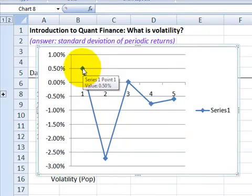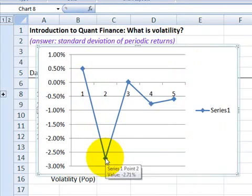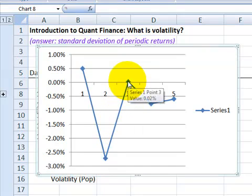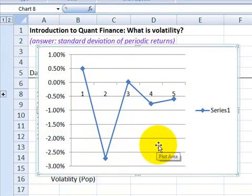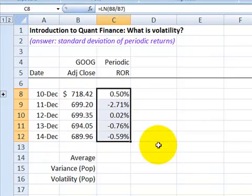On Tuesday, its daily rate of return was negative 2.71%. Then on Wednesday, the daily periodic return was pretty close to zero. So the picture of volatility is not about the level of prices, but about the rates of return. So I'll delete that.